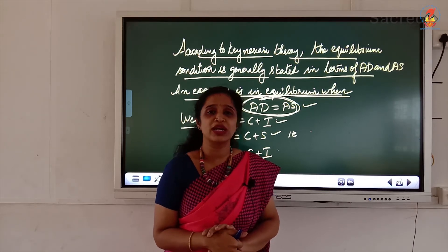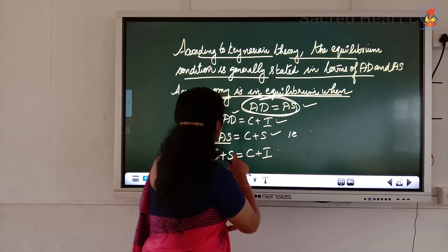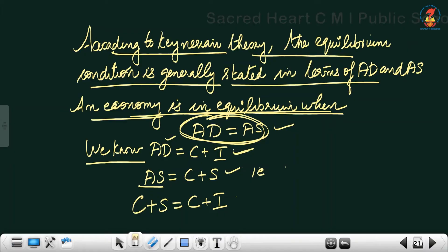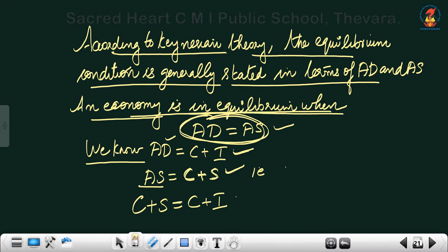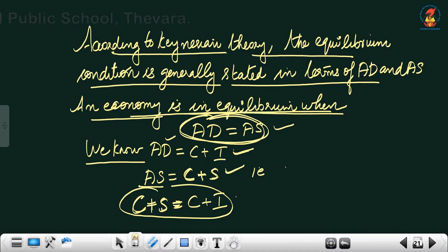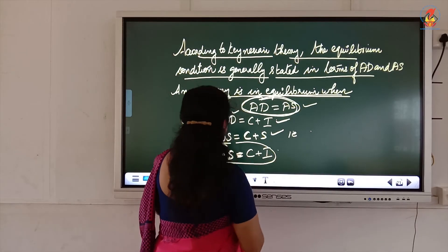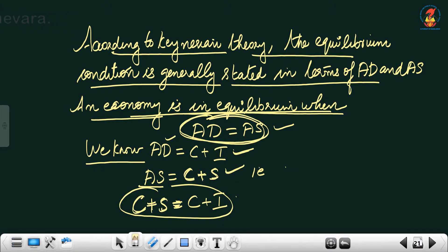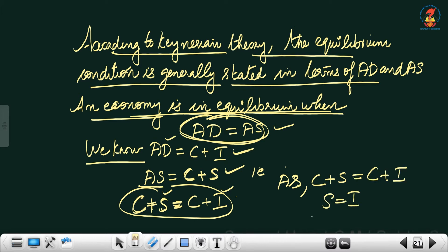Since AD equals C plus I and AS equals C plus S, we can write C plus S equals C plus I. From this we can derive the saving-investment approach: cancelling C from both sides gives us S equals I. This second approach is derived directly from the AD-AS equilibrium condition.